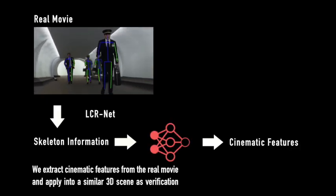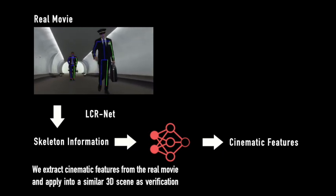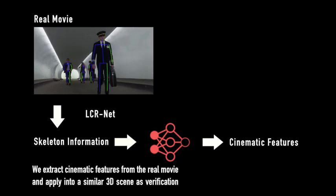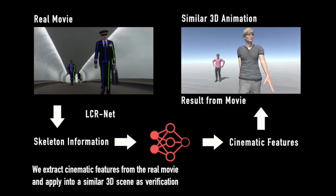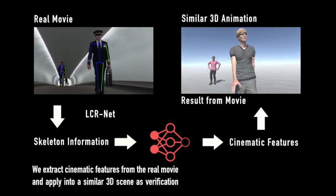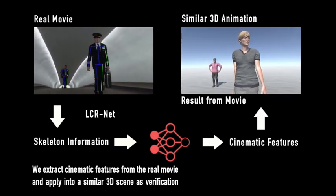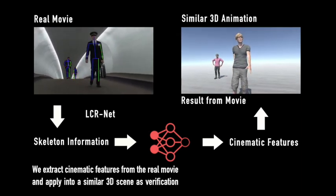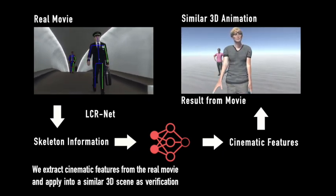First we validate the results of our cinematic feature estimator. We analyze a film clip to extract 2D skeletons, then rely on our trained deep learning network to estimate cinematic features such as camera angles, composition, and character-relative configurations. We then design a 3D animation that only reproduces the character layout of the film clip, and directly apply the camera parameters estimated by the network. As displayed in the side-by-side comparison, the camera angles, framing, and distance appear similar to those of the reference on a frame-by-frame basis, meaning that the features are well estimated.